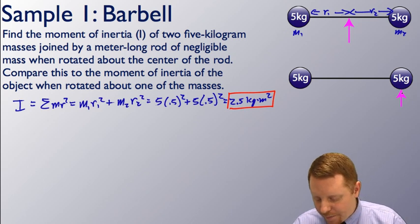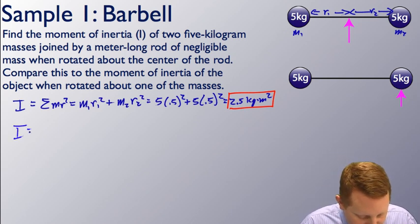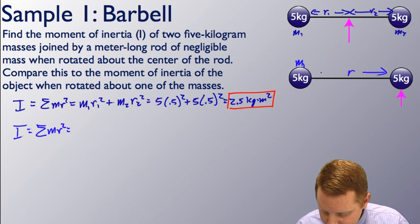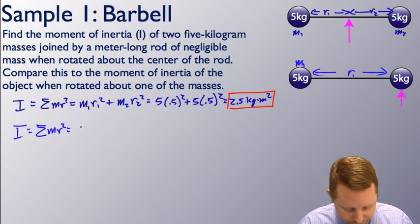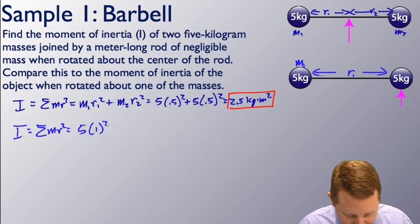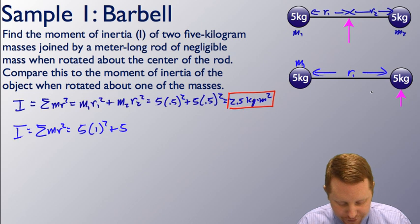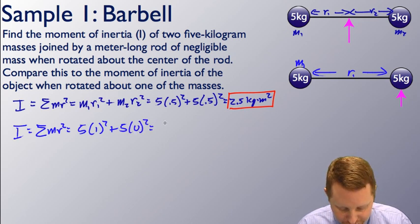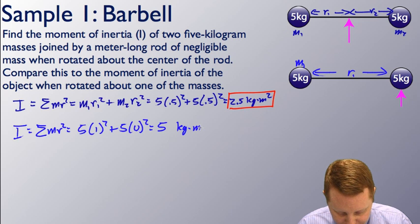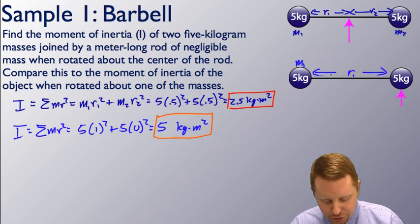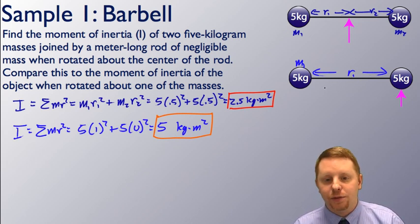Now, if we rotate about one of the end masses, the moment of inertia I is again the sum of mr squared. We have m1 at a distance r1 of 1 meter, so 5 times 1 squared, plus our second mass of 5 kilograms, but it's at zero distance from the axis of rotation, so times 0 squared. That gives 5 kilogram meters squared. Notice we have a larger moment of inertia — it will be harder to accelerate this rotationally.